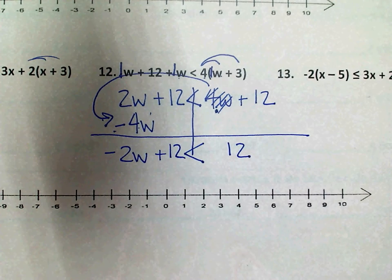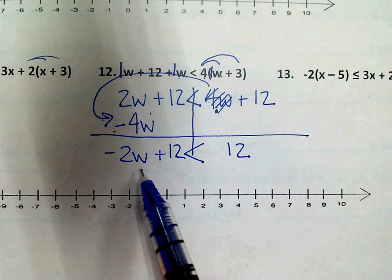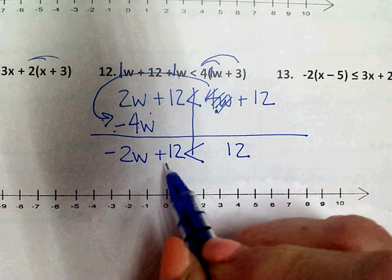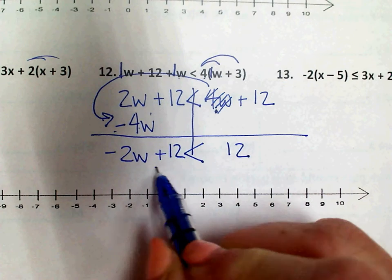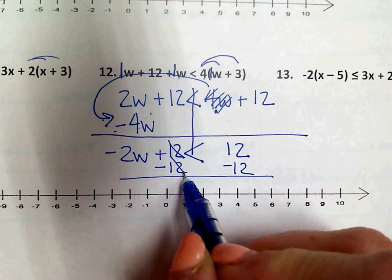So all that's left on this side is the 12 less than 2W minus 4W is negative 2W. And now I'm going to do whatever it takes to get this W by itself. So I see it has a plus 12, so I'm going to minus 12 from each side so that these will cancel.